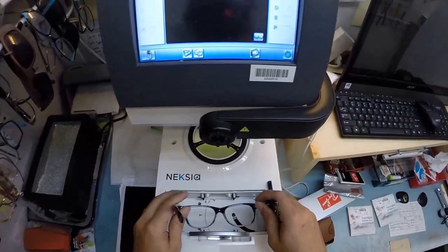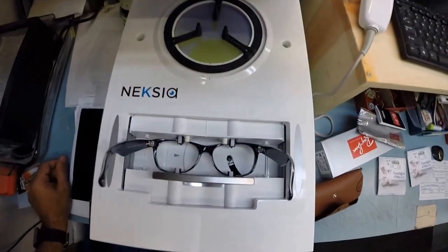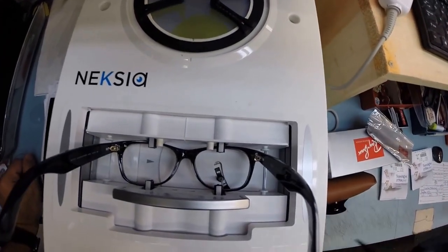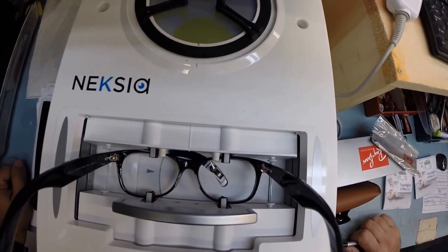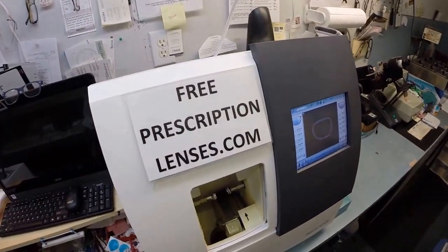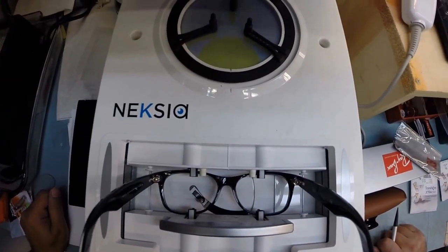Let me take your frame and put it into the tracing element of my edger. Hit that little green circle. Everybody wants to know how does the machine know what shape lens to cut? This is why: that little stylus is gonna pop up and trace the shape of the right lens before moving over and doing the same for the left.